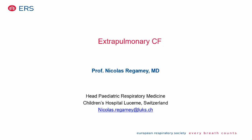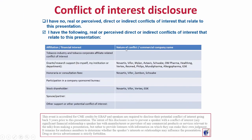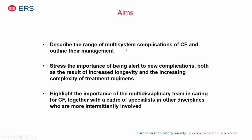Transitioning to extrapulmonary CF: this is a huge chapter. The CF lung is the most importantly damaged organ, but with longer survival, many other organs develop complications that must be monitored.